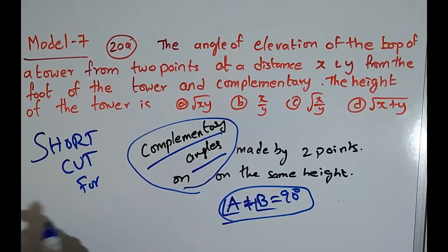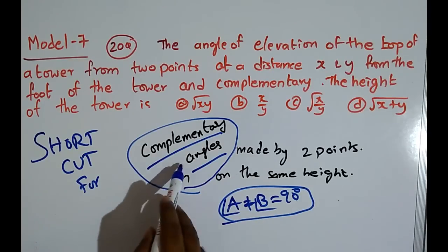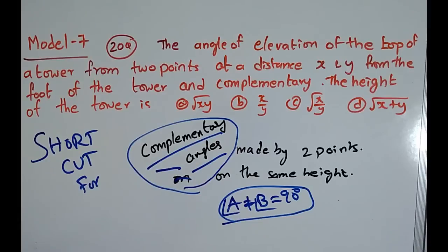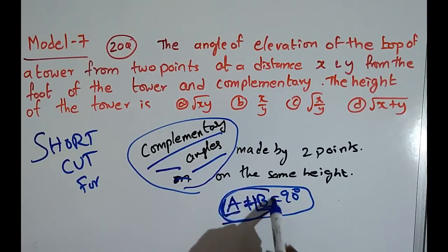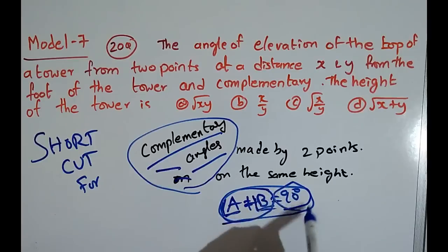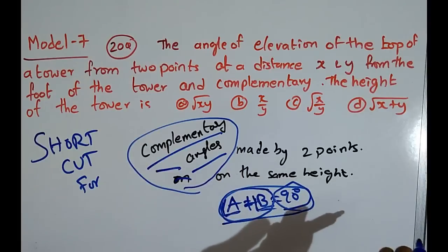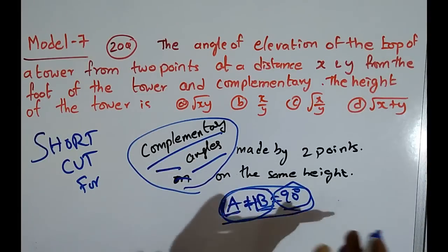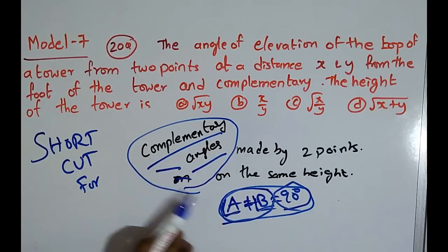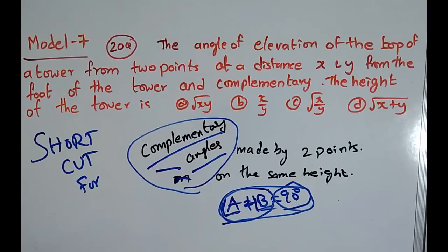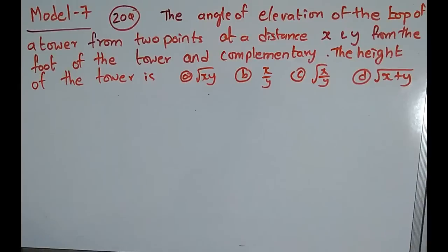This shortcut's name is complementary angles. What is a complementary angle? If there are two angles A and B and the sum of these two angles equals 90 degrees, then they are called complementary angles. We also have supplementary angles when the sum of two angles equals 180 degrees. This shortcut is only for complementary angles.